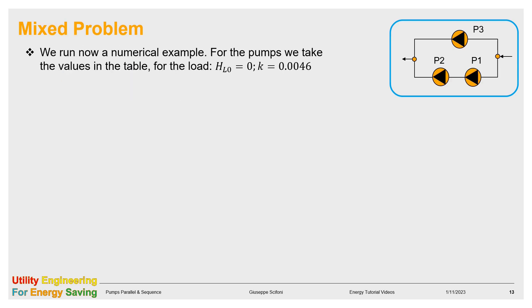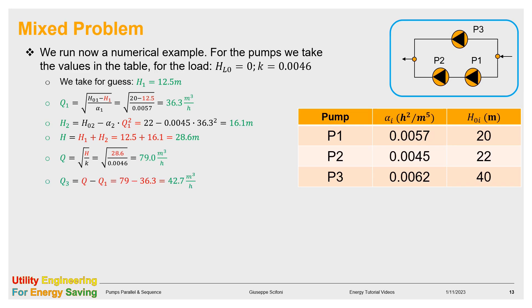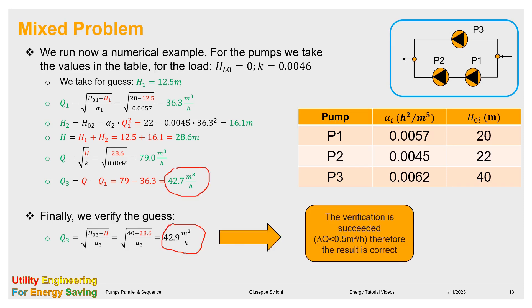Let's see now a numerical example of above. The network data are given: no static load and K equals 0.0046. The pump's parameters are assumed in the table aside. We take as guess value H₁ equals 12.5 meter. Consequently, as seen in the previous slide, we can calculate in a row the remaining unknowns: Q₁, H₂, H, Q and Q₃. At the very end, we verify the guess by calculating Q₃ once again from equation number 3. Since the new value is not deviating significantly, that is less than 0.5 cubic meter per hour, we say that the verification succeeded. The working point is for Q, 79 cubic meter per hour and for H, 28.6 meter.